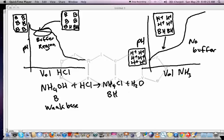What we'd be left with at this point would be four B's and two BH's. This is a mixture of a weak base and its conjugate acid, so we are getting a buffering situation going on here.